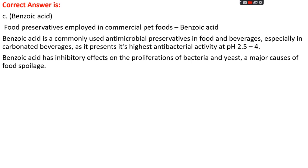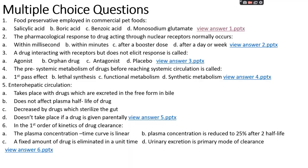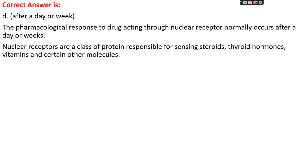Benzoic acid has an inhibitory effect on the proliferation of bacteria and yeast, which are major causes of food spoilage. Question number two: the pharmacological response to a drug acting through nuclear receptors normally occurs — option A: within milliseconds, option B: within minutes, option C: after a booster dose, or option D: after a day or week. The right answer is option D, after a day or a week.